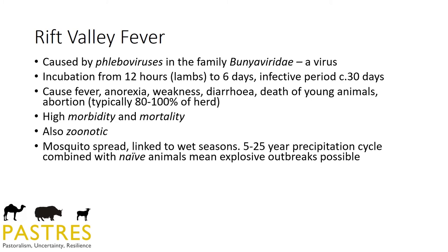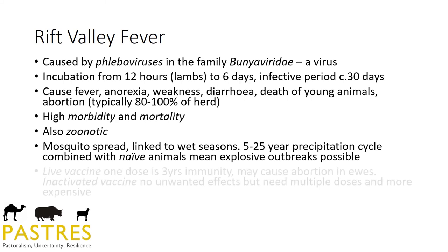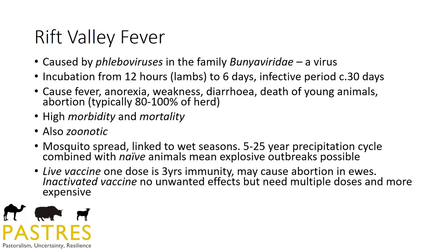RVF is spread by mosquito. Whereas tsetse flies are located in forest, mosquito spread here ties to the precipitation cycle — typically on a five to 25 year cycle in these areas. You can have nothing for two decades, then a massive explosive outbreak, usually tied to the fact that animals haven't been exposed and have no background resistance. A huge number of naive animals, a sudden explosion in the mosquito population, and a massive problem. How you deal with that uncertainty and risk means the two diseases may lead you to make very different decisions.